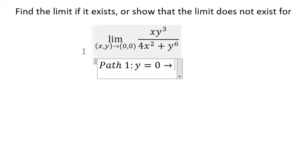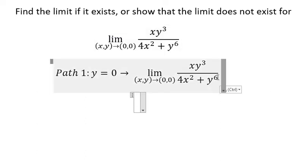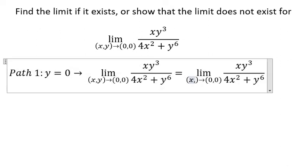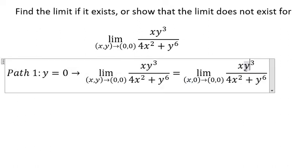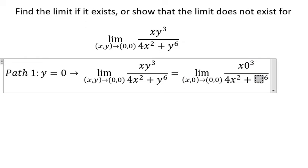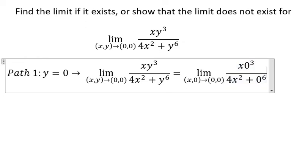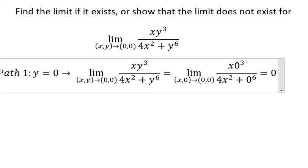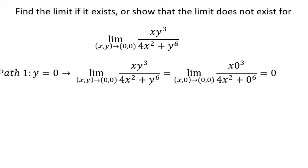That means we have this one. We put y equals zero in here and in here. So if we calculate, we get zero. Now let's consider path number two, that is x equals y to the power of 3.